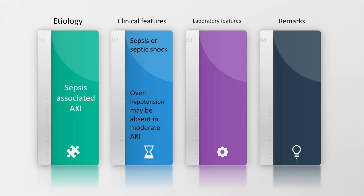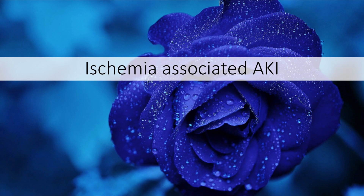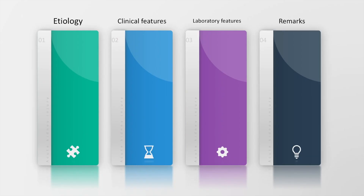Sepsis-associated AKI may present with overt hypotension, but this may be absent in moderate acute kidney injury. Labs in such a patient would generally show a positive culture from a normally sterile site, and urine sediment often contains granular casts, renal tubular casts, and epithelial cell casts.